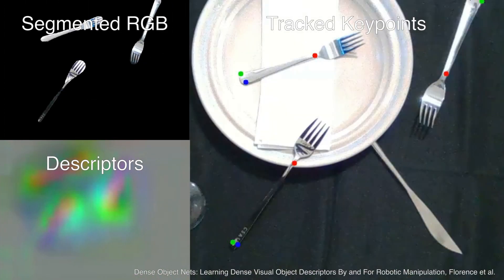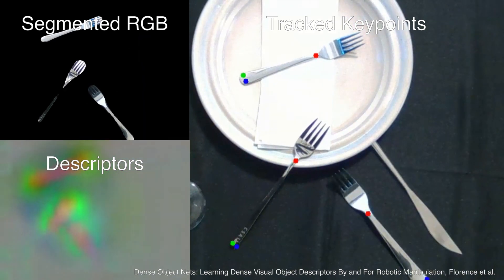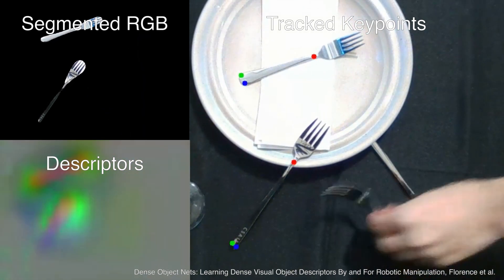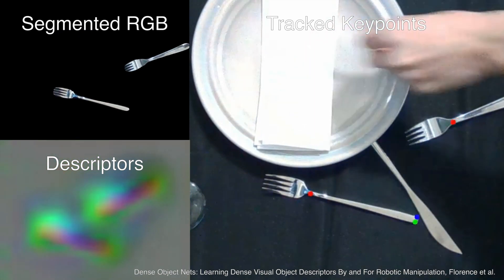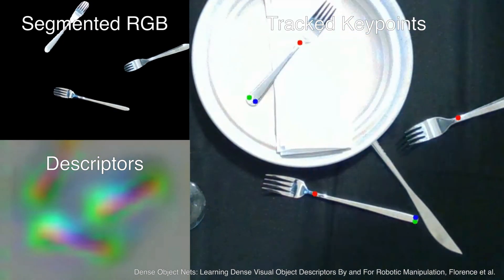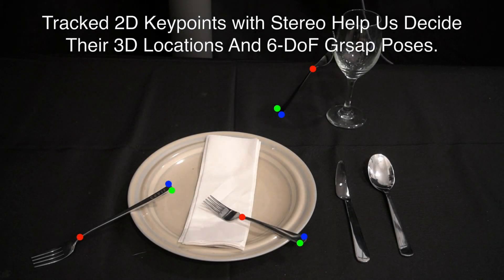Since the descriptors are dense, we can arbitrarily select keypoints and track them. In these examples, we show three keypoints colored in red, green, and blue. This is more flexible than most keypoint detection methods because one can decide which points to track during test time. The tracked 2D keypoints with stereo image pairs help us derive their 3D locations and 6-degree-of-freedom grasp poses for accurate pick and place.